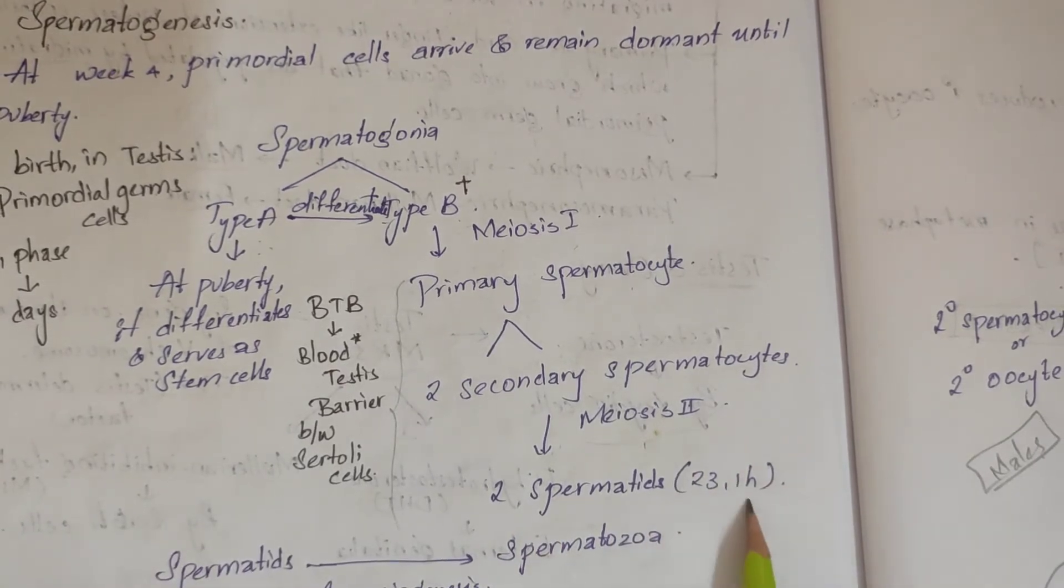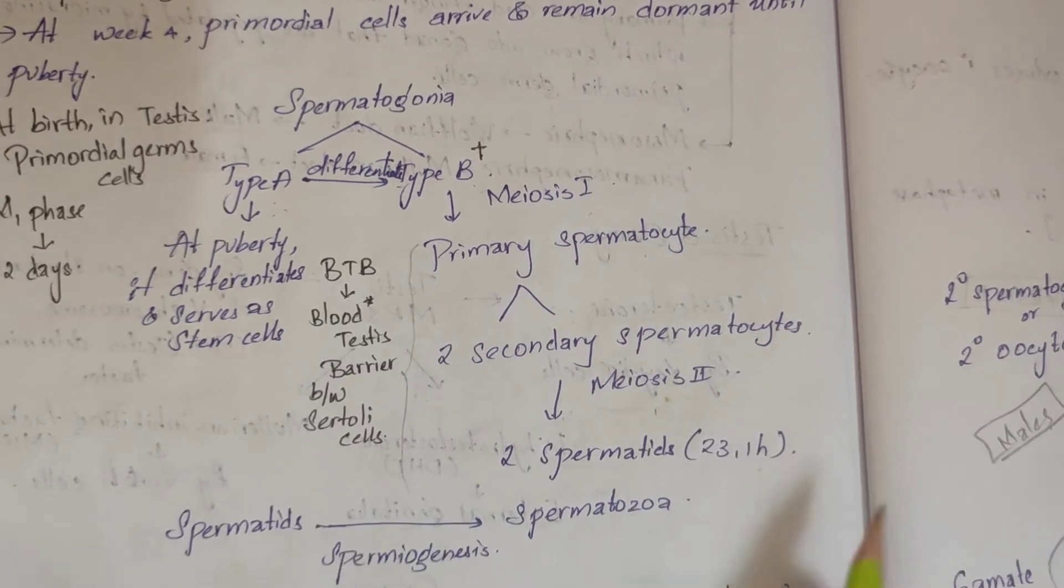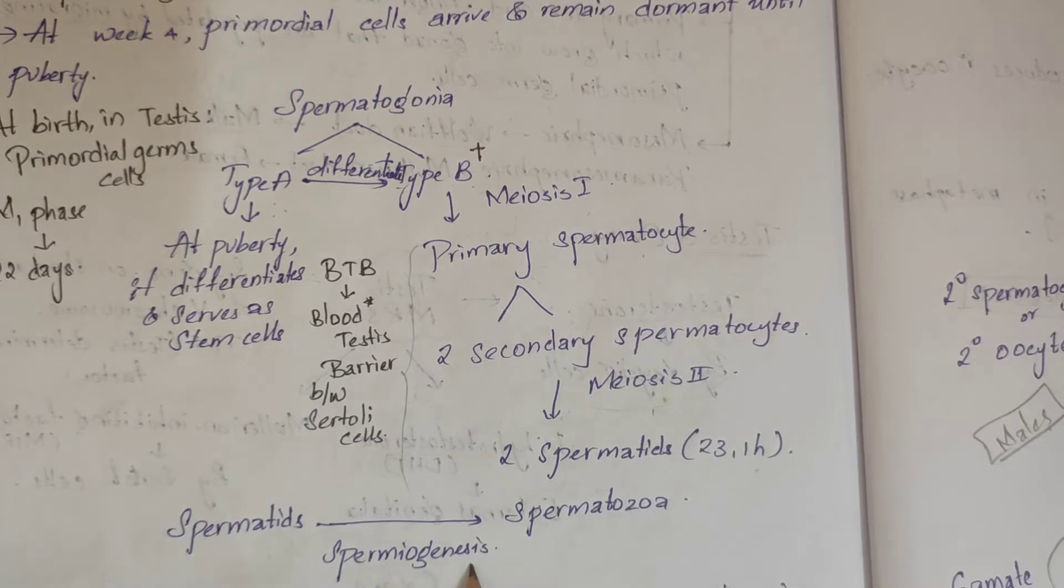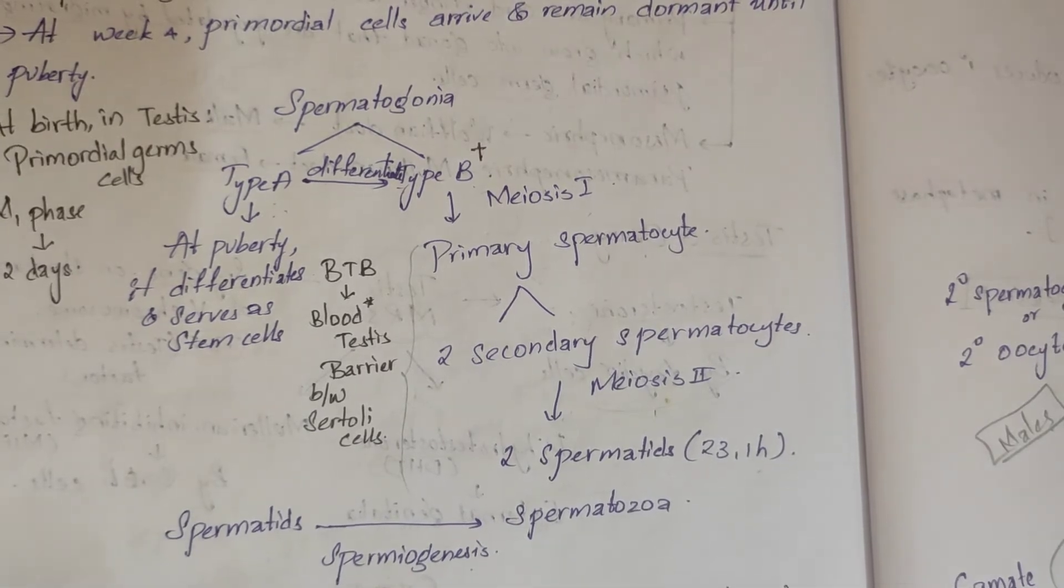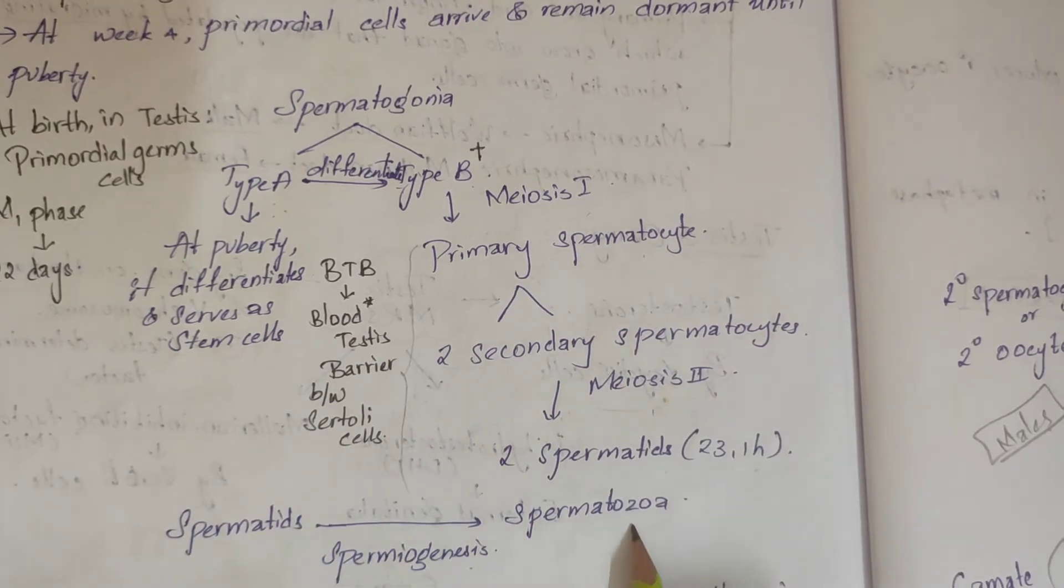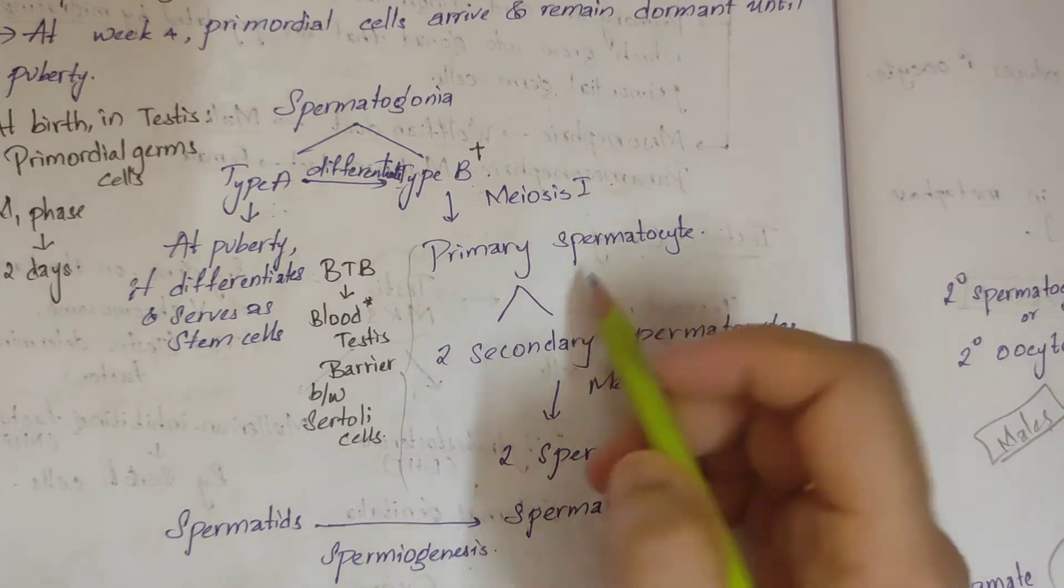In meiosis 2, it forms two spermatids which have 23 chromosomes and one haploid pair. Next, spermatids develop into spermatozoa with the process of spermiogenesis.